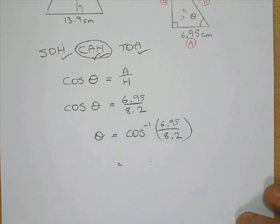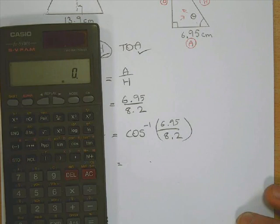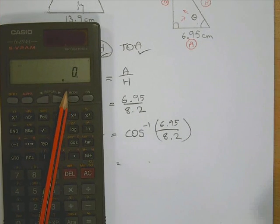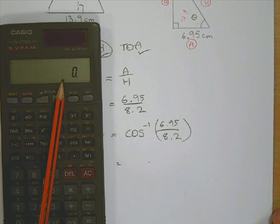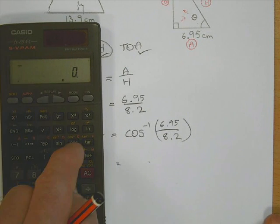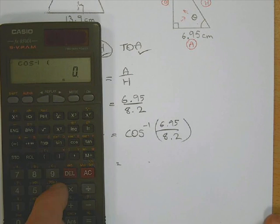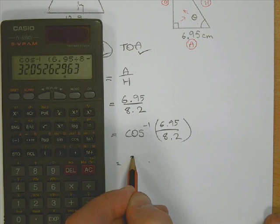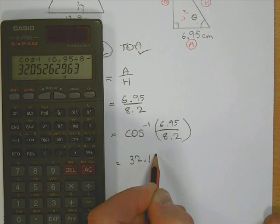So when you put that into your calculator, make sure your calculator is in degrees. You can just see a little D there. So I'm going to press the second function, cos in brackets, 6.95 divided by 8.2, close brackets. And I've got the answer there of 32.1 degrees to one decimal place.